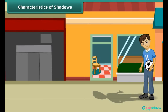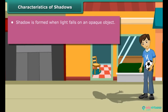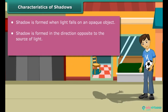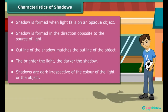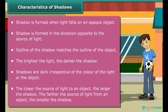Let us list the important characteristics of shadows. Shadow is formed when light falls on an opaque object. Shadow is formed in the direction opposite to the source of light. The outline of the shadow matches the outline of the object. The brighter the light, the darker the shadow. Shadows are dark irrespective of the color of the light or the object. The closer the source of light to an object, the larger the shadow. The farther the source of light from an object, the smaller the shadow.